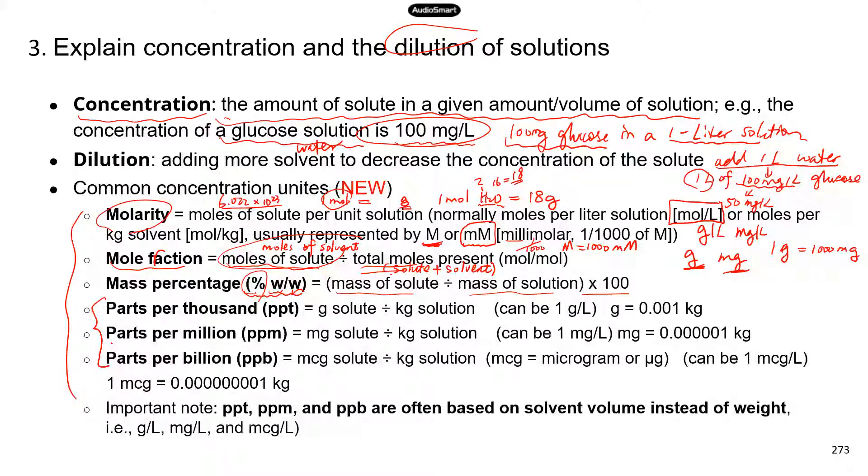The last three are very common concentration units. Parts per thousand. So that's usually the solute, the weight of the solute in gram, divided by the weight of the solution in kilogram. And because one gram is one thousandth of a kilogram, so that's parts per thousand.